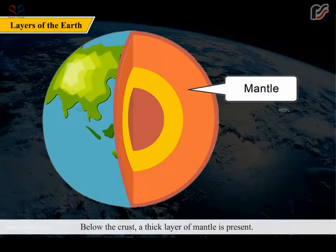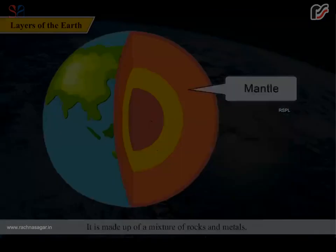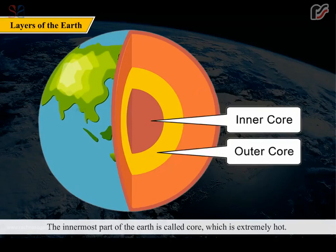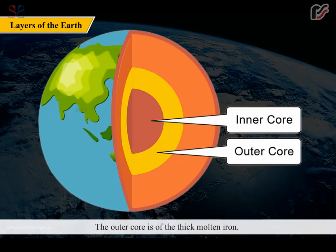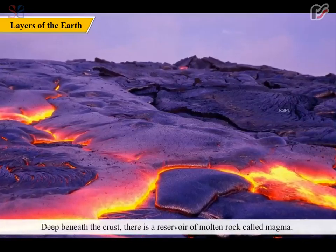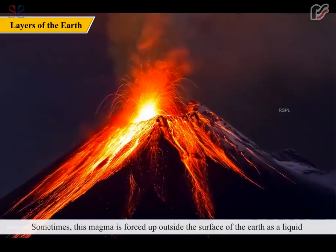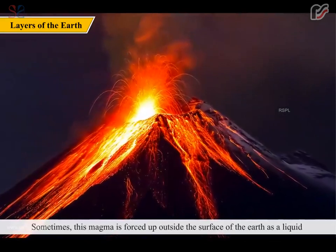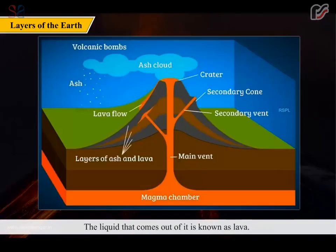Below the crust, a thick layer of mantle is present. It is made up of a mixture of rocks and metals. The innermost part of the Earth is called the core, which is extremely hot. It is divided into inner core and outer core. The inner core is a ball of hot solid iron. The outer core is thick molten iron. Deep beneath the crust, there is a reservoir of molten rock called magma. Sometimes, this magma is forced up to the surface of the Earth as a liquid through weak points called cracks in the form of a volcano. The liquid that comes out is known as lava.